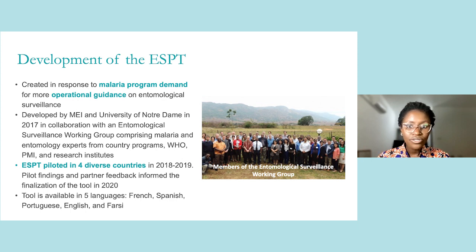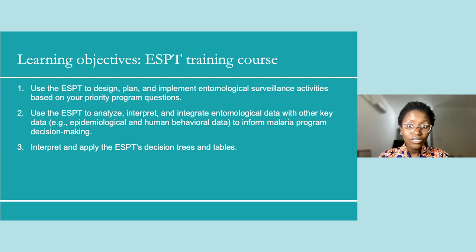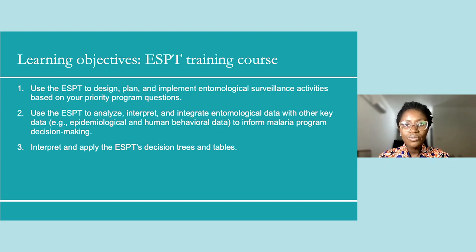All language versions of the ESPT are currently available on the MEI website at shrinkingthemalariamap.org. The ESPT is divided into nine modules. For each module, there are two to three learning objectives that indicate the knowledge or skills you should learn by the end of that module. Together, the learning objectives for the individual modules contribute to the overall learning objectives of the ESPT training course.